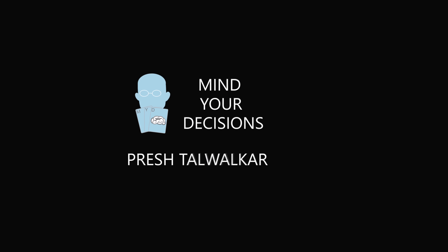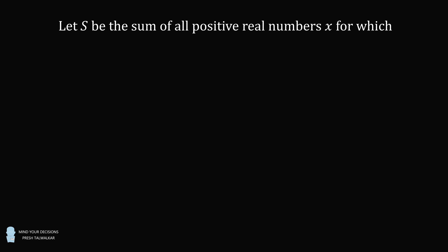Hey, this is Presh Talwalker. Let s be the sum of all positive real numbers x for which x to the power of 2 to the power of square root of 2 is equal to square root of 2 to the power of 2 to the power of x.